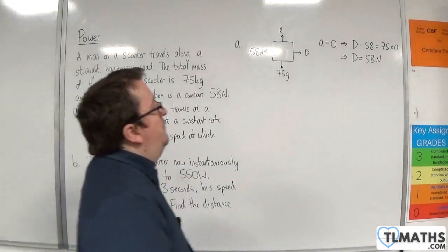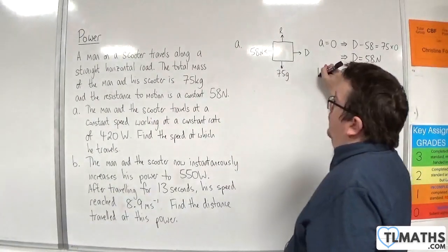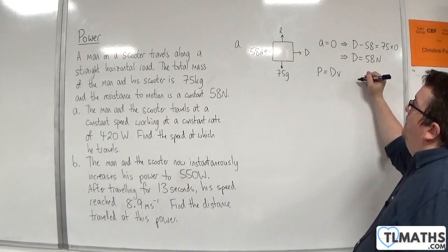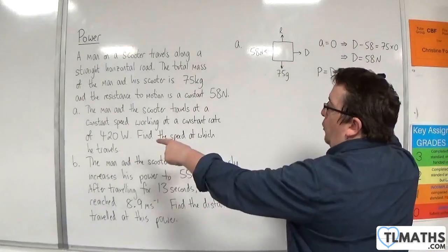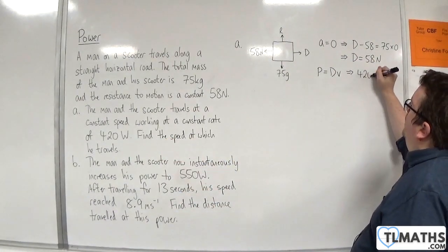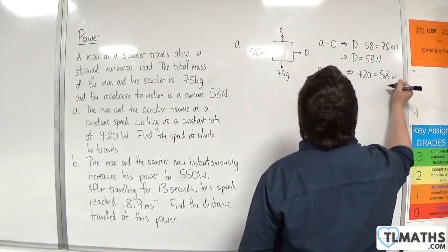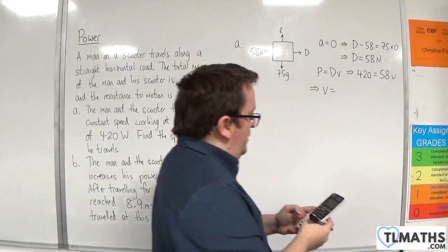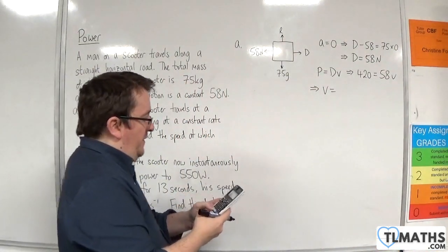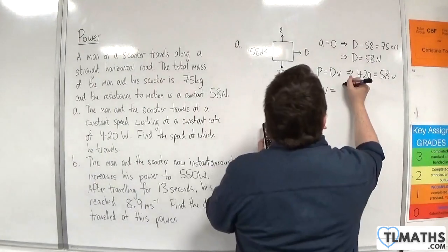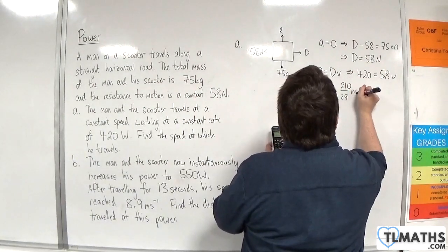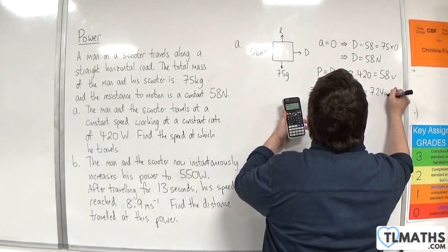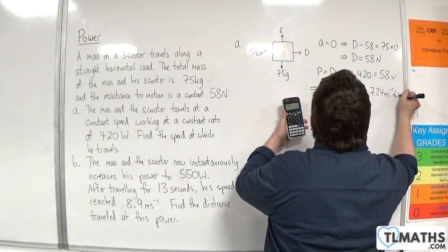Now, we have the formula for power. Power is equal to the driving force times by the velocity. So the power here is 420 watts, and that's going to be equal to 58 times by the velocity that I want. So the velocity here is 420 divided by 58, which is 210 over 29 meters per second, which is 7.24 meters per second to 3 sig fig.